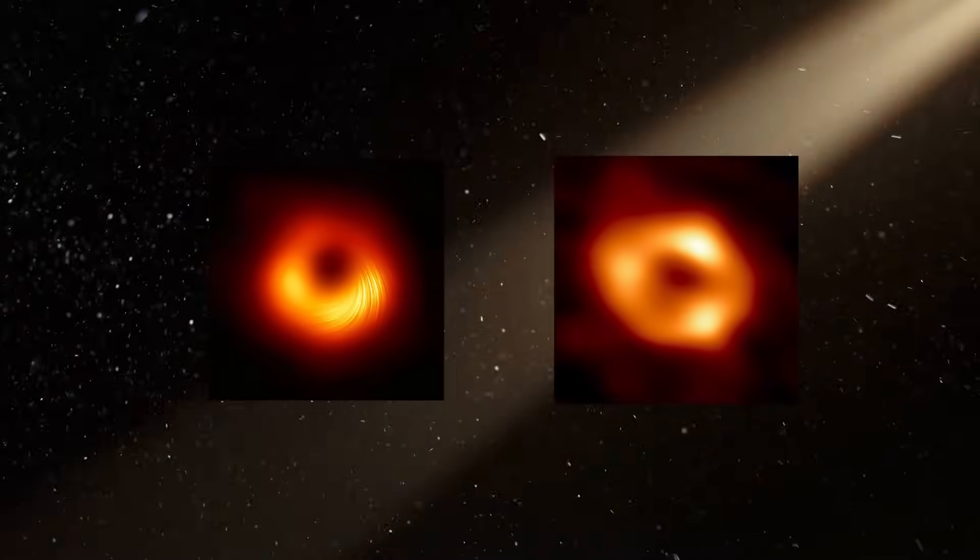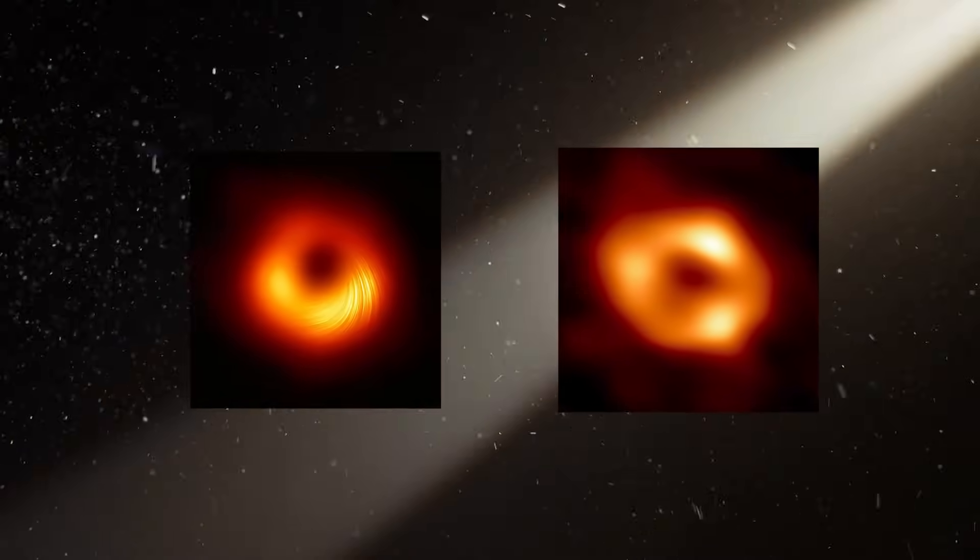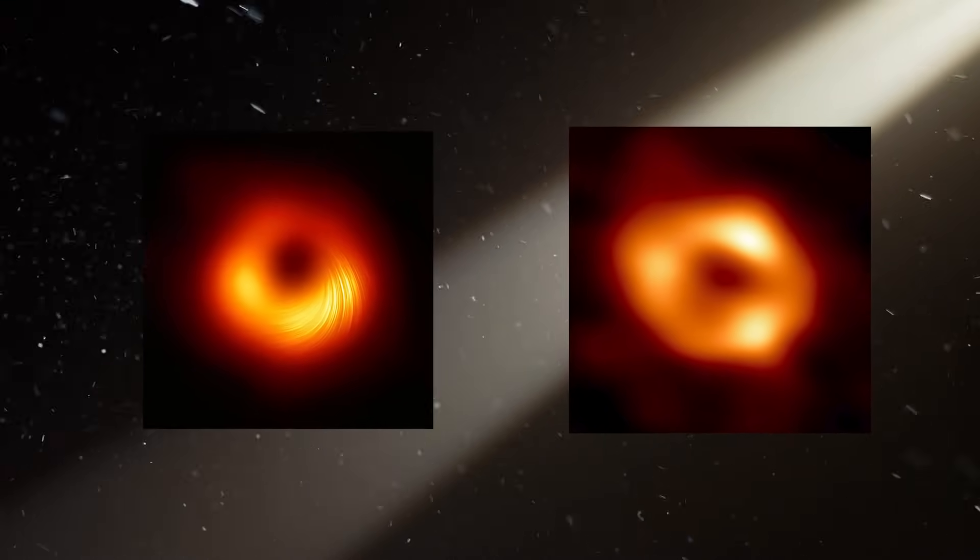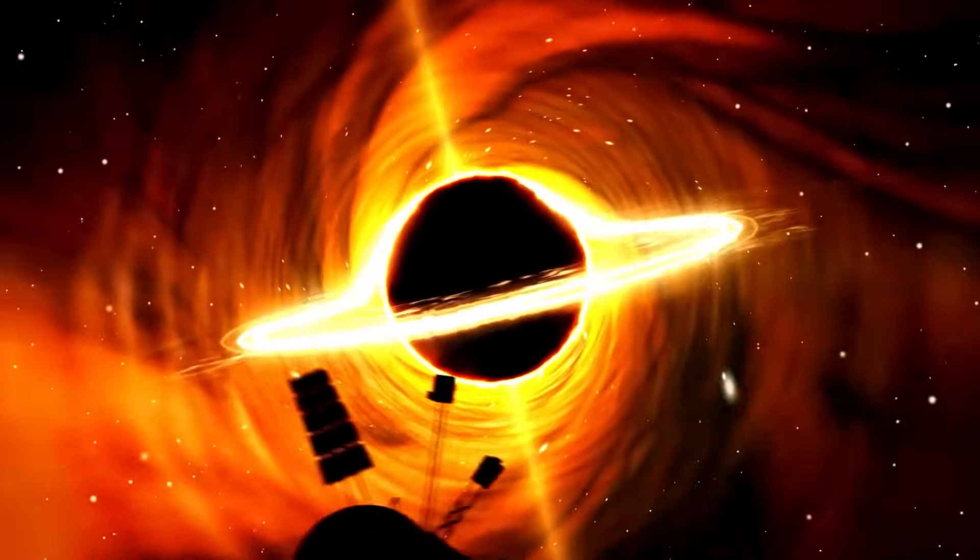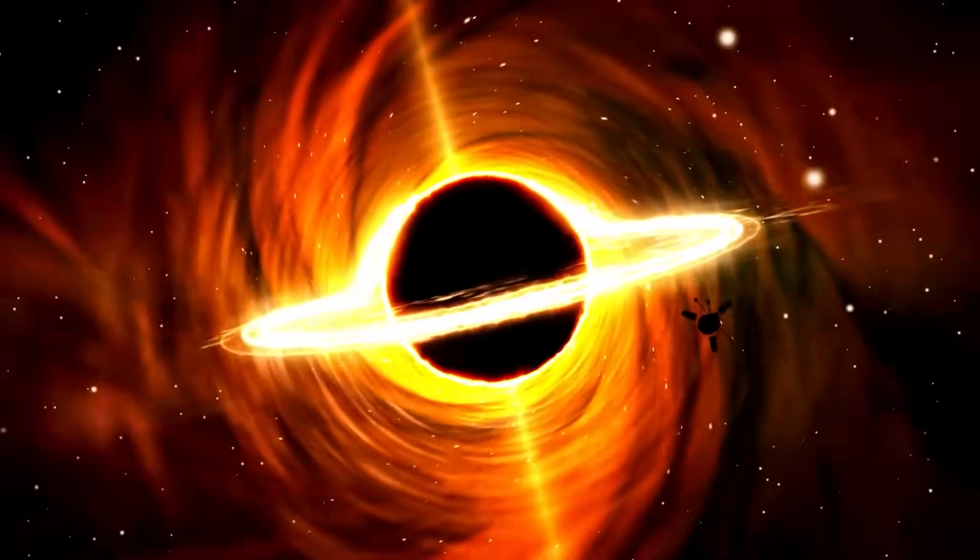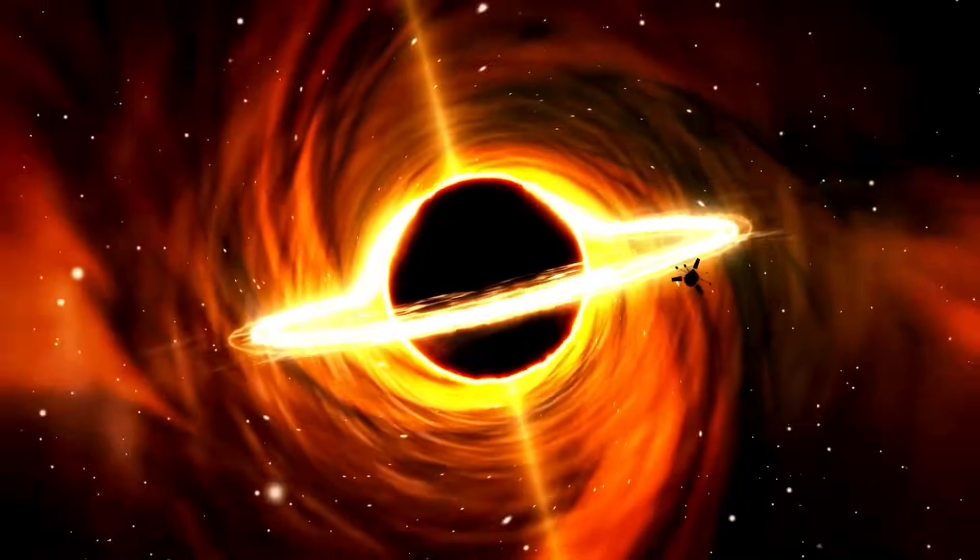The actual black hole itself cannot be seen, but we can observe the behavior of nearby objects influenced by its strong gravity. The radio and infrared energy we detect comes from gas and dust that get extremely hot, reaching millions of degrees as they fall into the black hole.